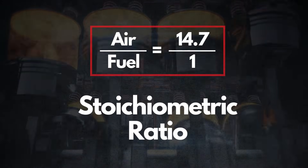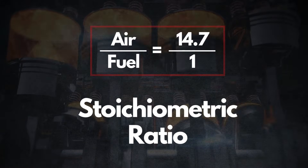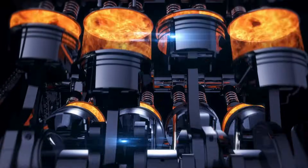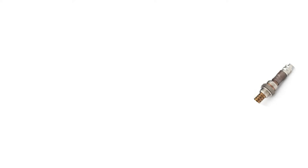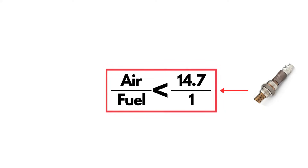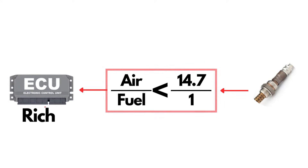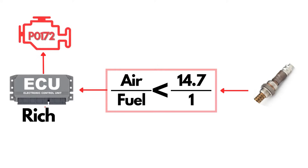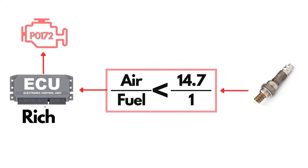This is known as the stoichiometric ratio. When the mixture is at this ratio, combustion is efficient and emissions are minimized. But when the oxygen sensor detects that the air-fuel ratio is lesser than 14.7 to one, meaning there's too much fuel or too little air in the mixture, the PCM interprets this as a rich condition. If this condition persists for an extended time, the PCM triggers the P0172 code, indicating that the system on Bank 1 is running too rich.